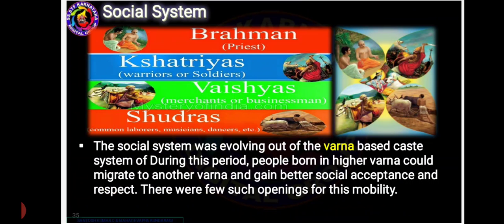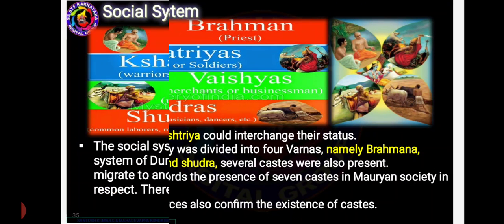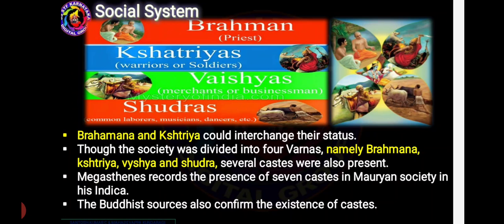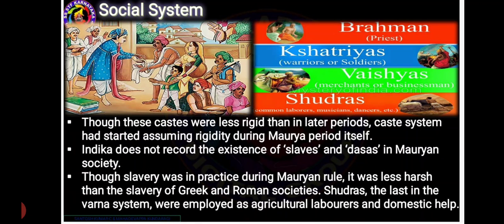A Varna-based caste system existed. People born in a higher Varna could migrate to another Varna and gain better social acceptance and respect. Brahmanas and Kshatriyas could interchange their status. Though there were four Varnas, several castes were also present. Seven main castes were practiced, as mentioned by Megasthanes. The caste system was not very strict. Shudras were employed as agricultural laborers and domestic help.